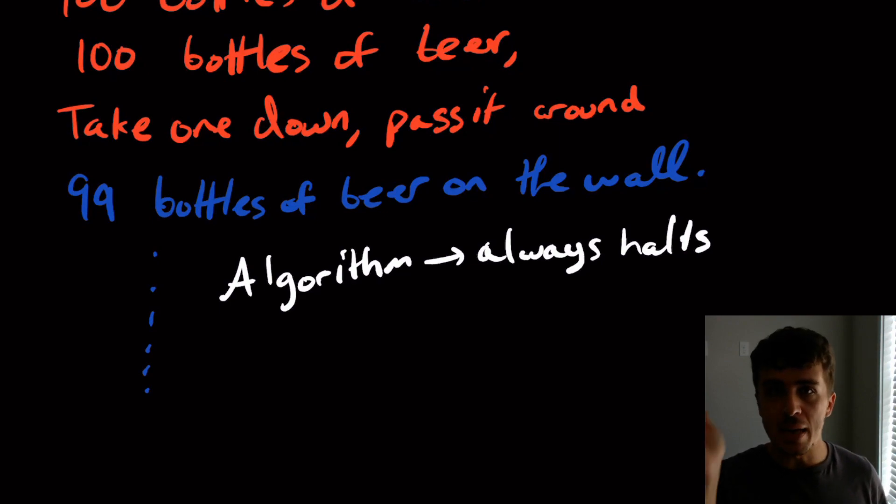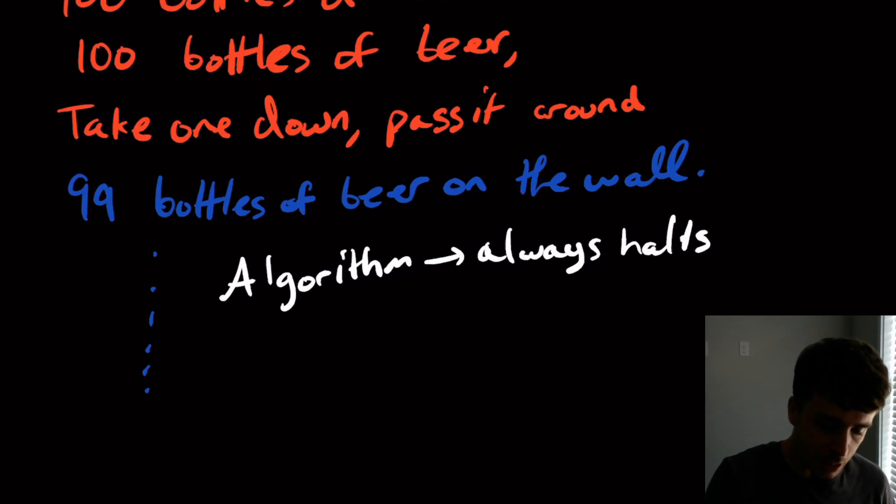What about if I wanted to output the digits of pi? So like I put three, and then one, and four, and one, five, nine, two, six, et cetera. Well, there are an infinite number of digits in pi, so that's obviously not going to stop. So what do we call that in this scenario? It's definitely not an algorithm because it doesn't stop.